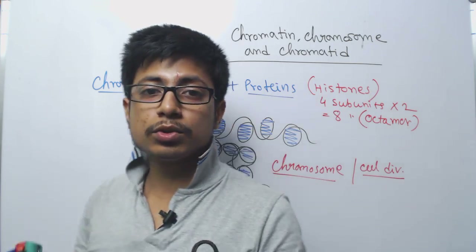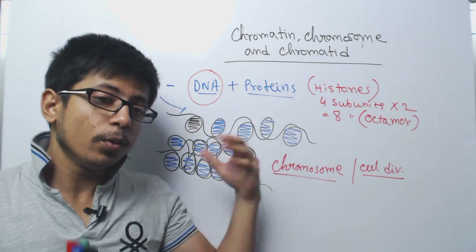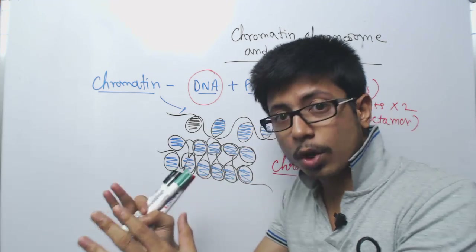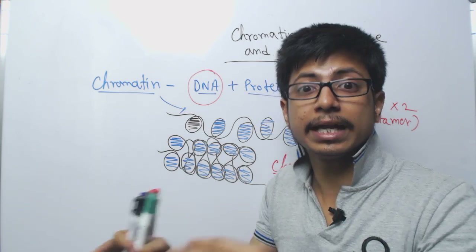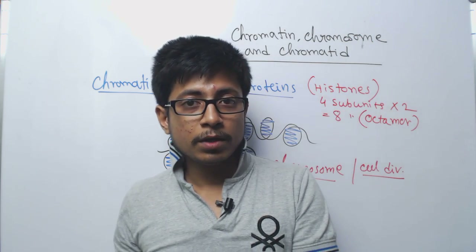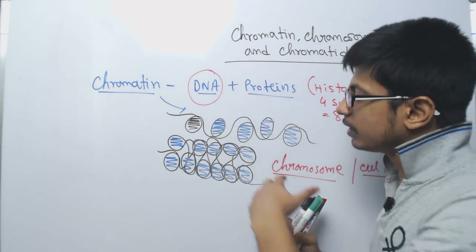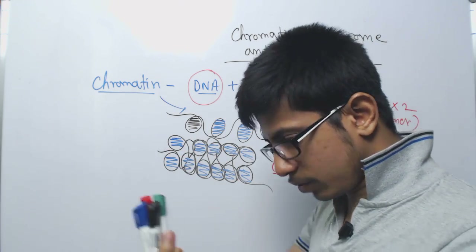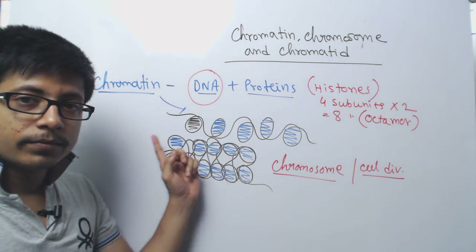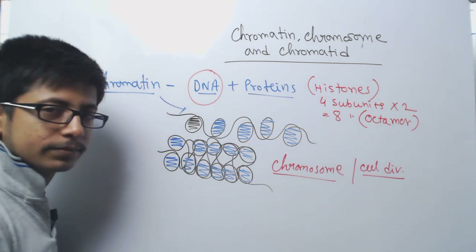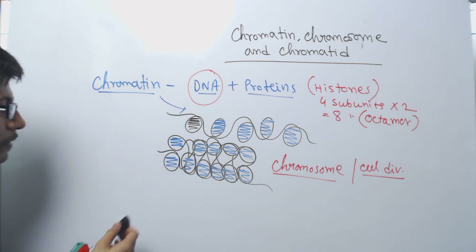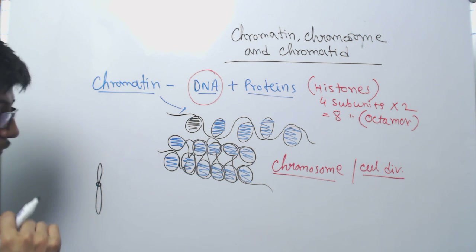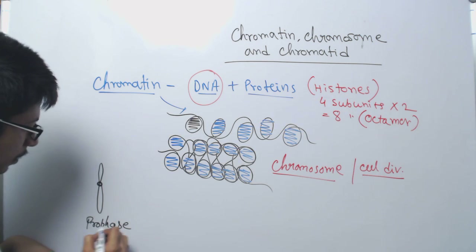During cell division we need to replicate the genetic content — the DNA. Once we replicate the DNA we make two different copies, because we need to distribute two copies into two daughter cells so that each cell receives the same genetic content. That is the idea of mitotic cell division — in mitosis, identical cells are generated from the mother cell. The DNA is condensed so that it is easier to replicate and then separate into the daughter cells.